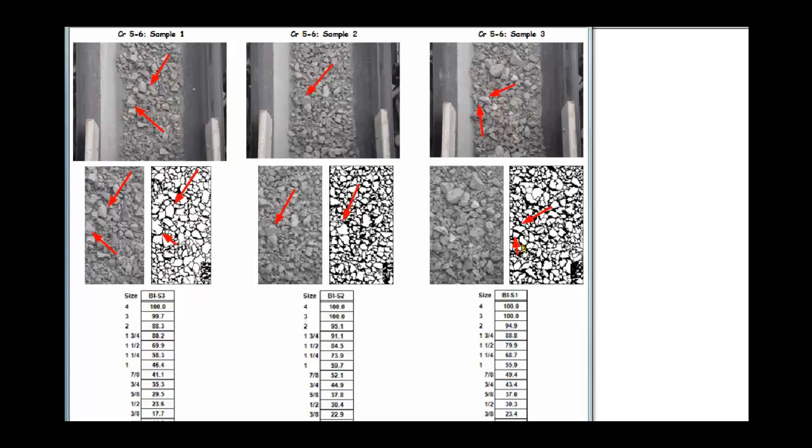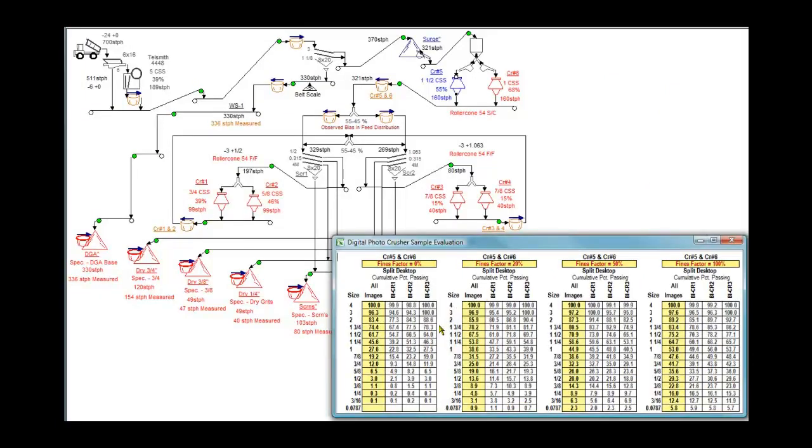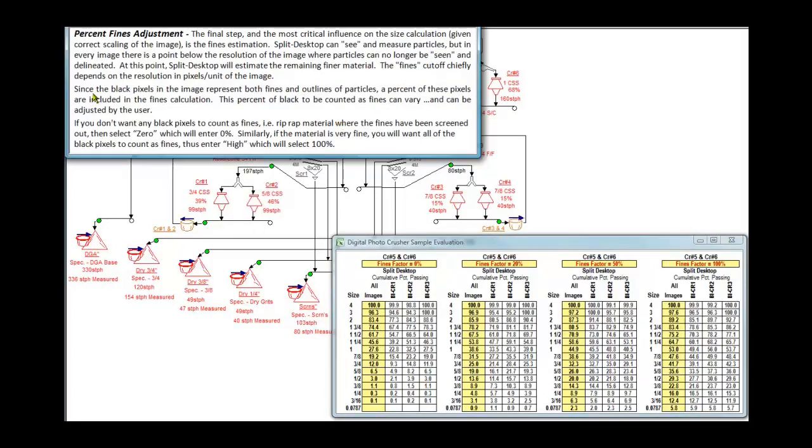So you're getting a picture of how the software converts the video image into a still image which then is cropped and delineated with the software to give you the gradations. The gradations are represented here in summary having been calculated with different fines factors. Fines factors are options within the software that allow you to tell the software how to recognize the black pixels, because the black pixels are either classified as the outlines of the particles or as part of the samples or as part of the fines, and it's pretty much up to you to subjectively define that either by visual observation or by field sample.